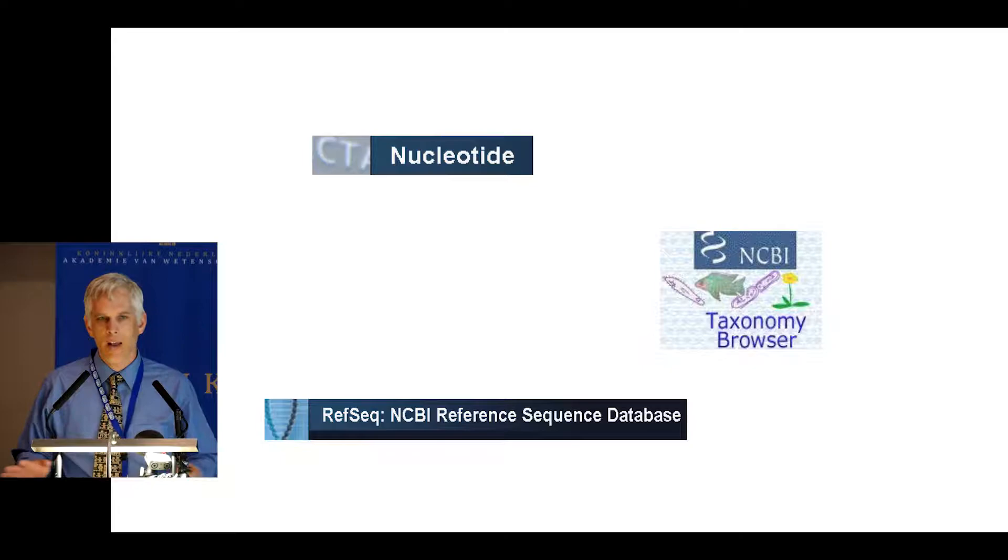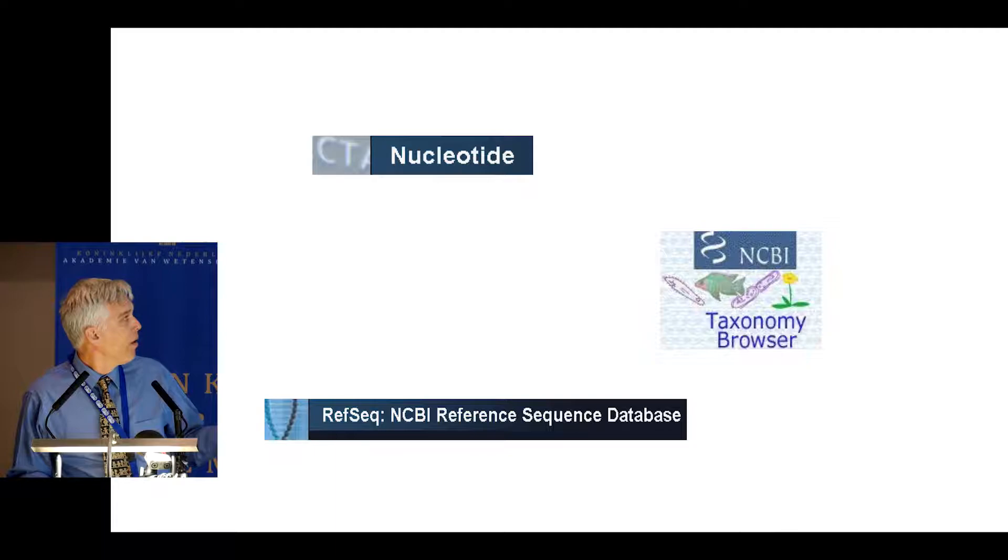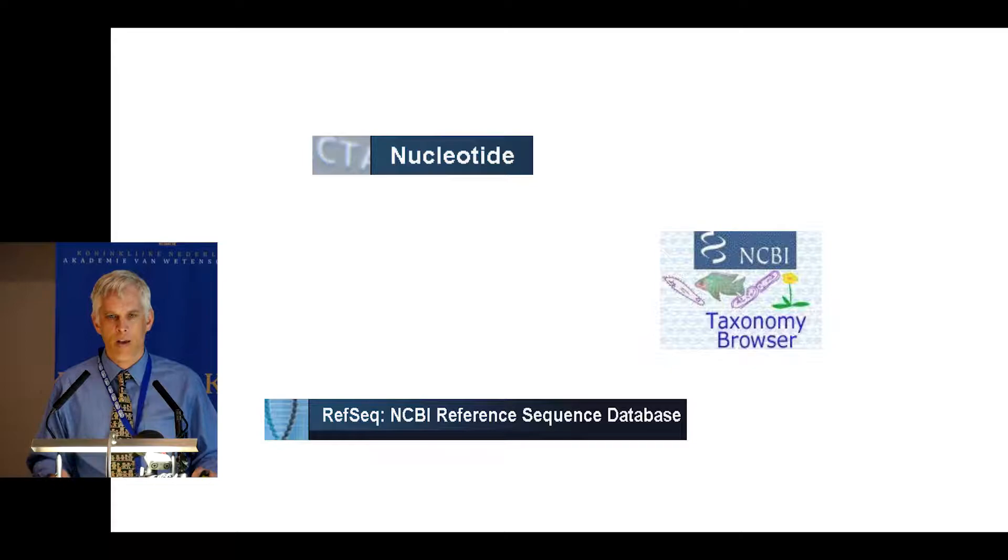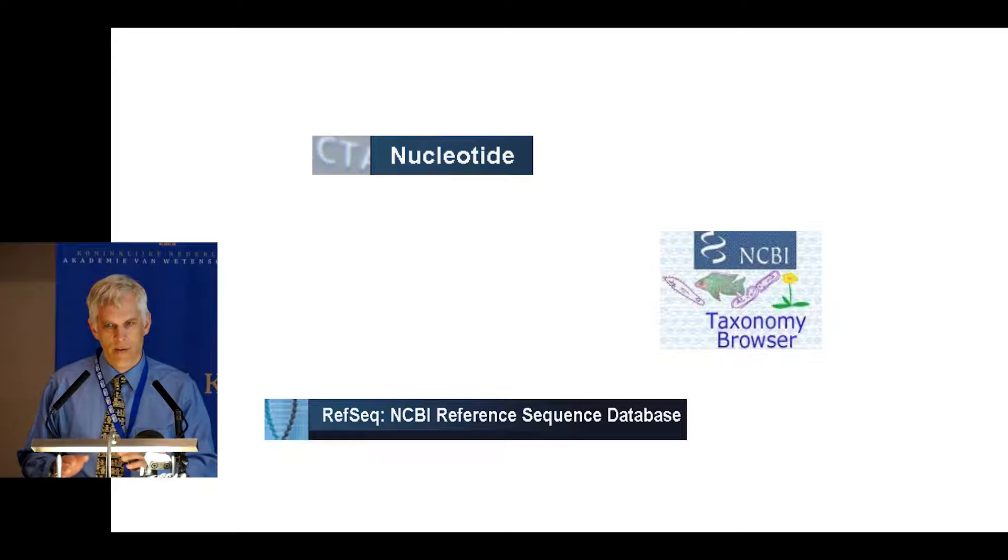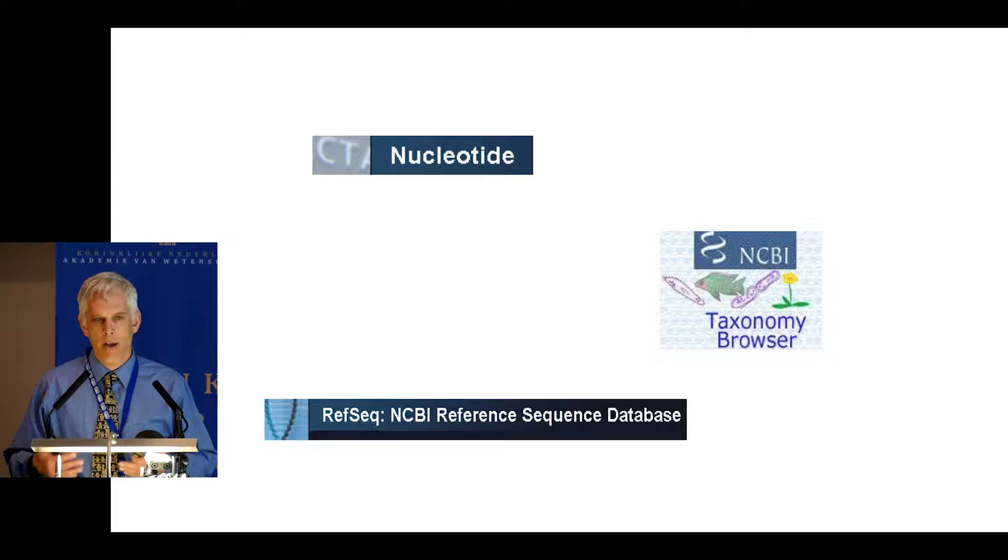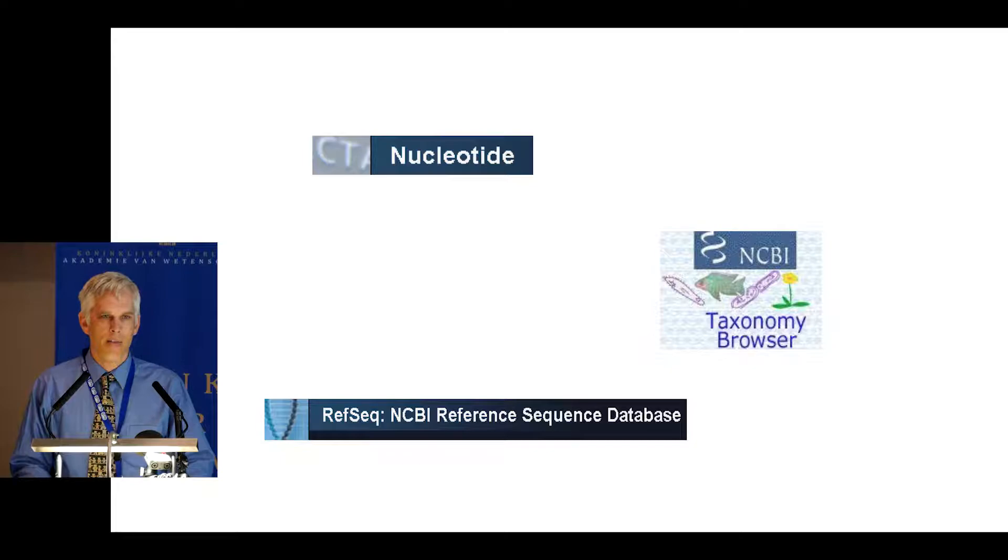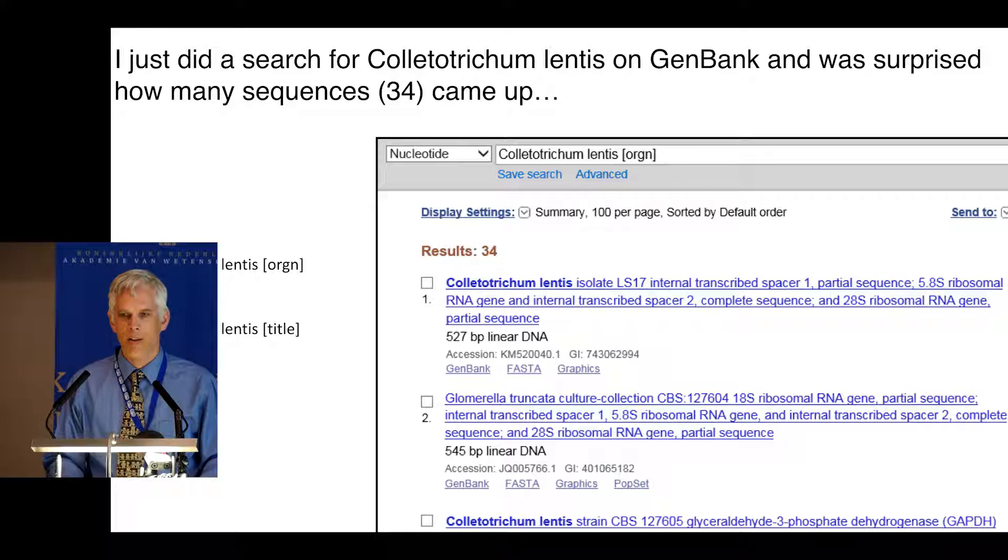Before I continue, I want to highlight three main databases in GenBank. The nucleotide database, which is commonly referred to as GenBank. Then there's RefSeq, which is a curated database taking accessions from GenBank. I will talk about the targeted loci part of RefSeq that focuses on specific barcode loci. The taxonomy database is a separate database that informs the other two. I'm the curator for fungal information at the taxonomy database, and the taxonomy database is used to populate certain fields in some of the other databases.